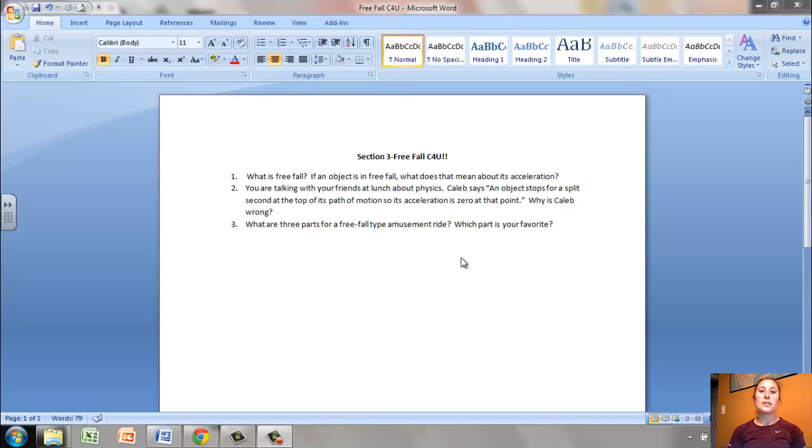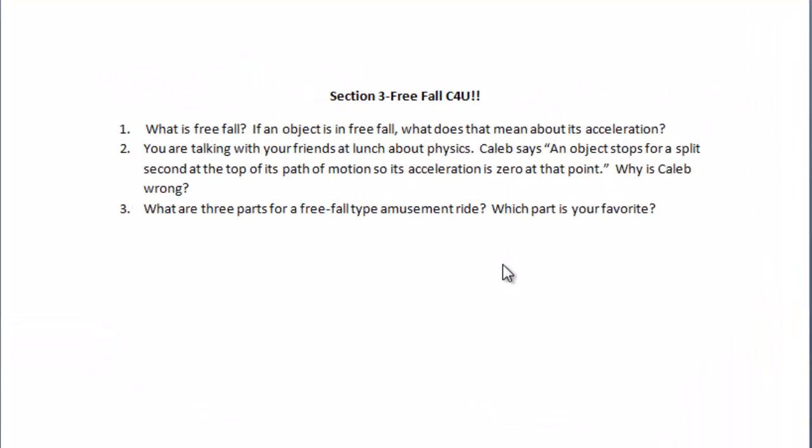Okay. So here are your check for understanding questions for section three about free fall. So number one, what is free fall? If an object is in free fall, what does this mean about its acceleration? Number two, you are talking with your friends at lunch about physics, of course. Caleb says, an object stops for a split second at the top of its path of motion. So its acceleration is zero at that point. Why is Caleb wrong? And number three, what are the three parts for a free fall type of amusement park ride? And which part is your favorite?